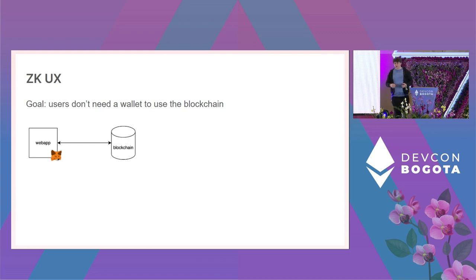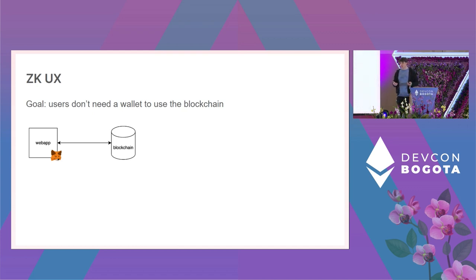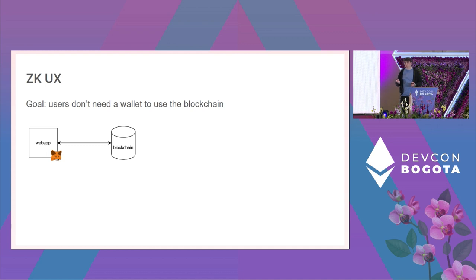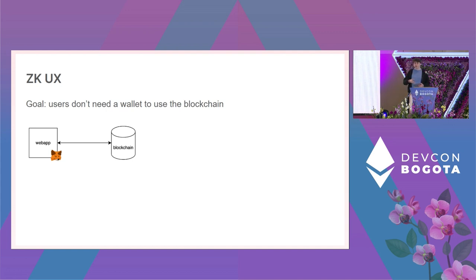The traditional dApp architecture is simple and unprecedented before blockchain, but users kind of hate it because they have to learn about wallets like MetaMask, transactions, gas, gas prices, Gwei, Ether — it's a lot to learn just to use a single dApp.